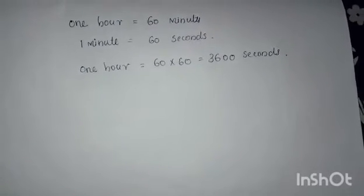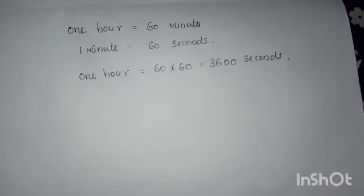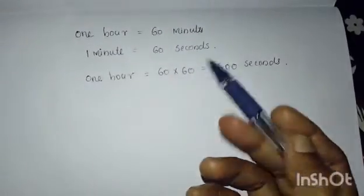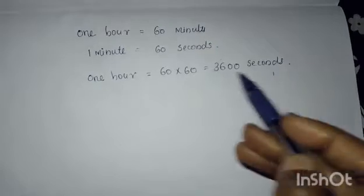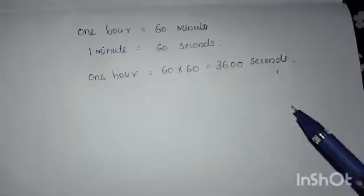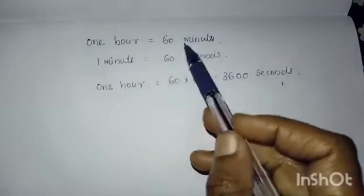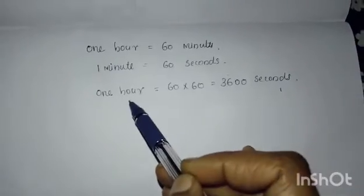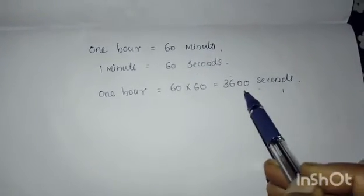Now we are discussing how speed can be expressed in meters per second. We know that 1 hour is 60 minutes, and 1 minute is 60 seconds. So we can convert 1 hour into seconds: 60 multiplied by 60 equals 3600 seconds. Therefore, 1 hour equals 3600 seconds.